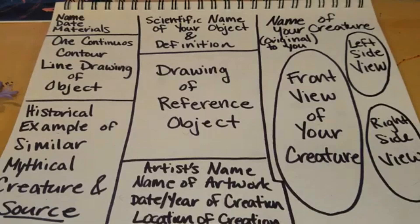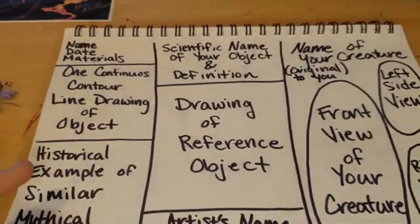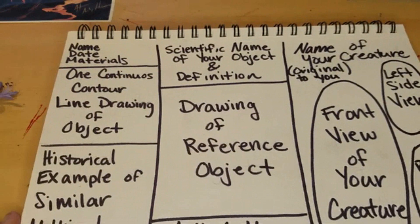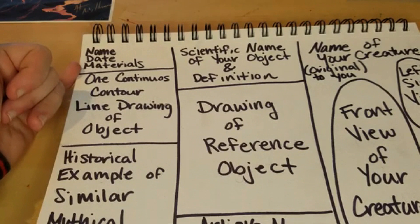For our template today, what you need to do is find one piece of paper. It doesn't matter what kind of paper — if you have thick paper, that's awesome. This is like watercolor paper, so it's a little more used to getting some water and wet materials on it compared to dry materials, but whatever you have works. In the top left of this template, you need to have your name, date, and the materials that you used or are going to use for this project.